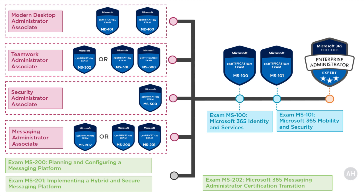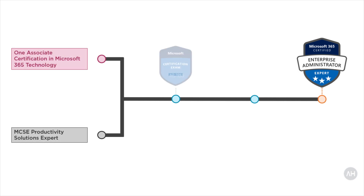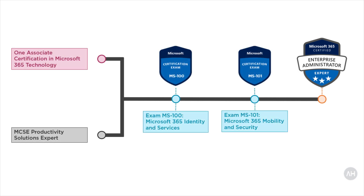Here is a bonus: if you already have the MCSE Productivity Solutions Expert badge, then you don't need to get any of the previous four associate badges. You only need to pass both the MS-100 and MS-101 exams to get your Microsoft 365 Enterprise Administrator Expert badge, because having the MCSE Productivity Solutions Expert badge means you've already proven enough skills. In summary, you need one Microsoft 365 Associate badge or to hold the MCSE Productivity Solutions Expert badge, then pass MS-100 and MS-101 to get your Microsoft 365 Enterprise Administrator Expert badge.